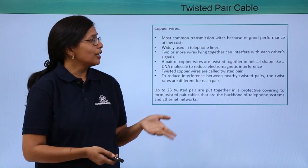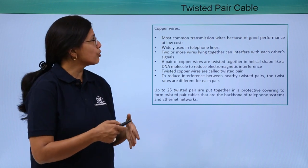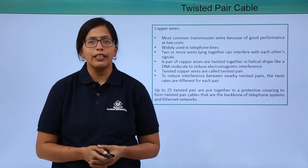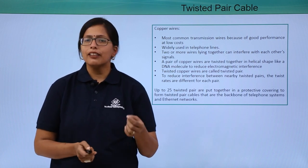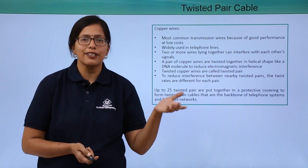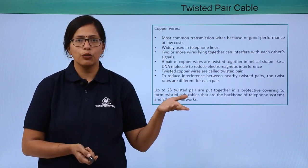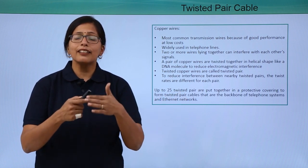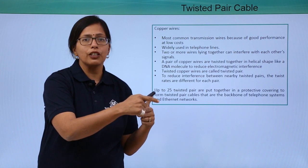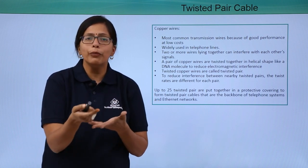Twisted pair cable is nothing but a copper wire. Copper wire is used to transfer data and it is widely used in telephone lines, but there is a small problem. The problem is that if you have two or more copper wires lying together which are transmitting data in the form of electromagnetic signals, then these signals interfere with each other. So the data that is being transferred could get garbled, meaning it is turned into meaningless data.